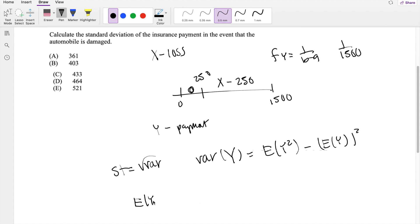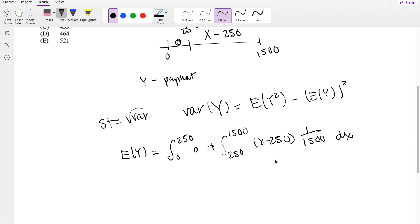So expected value of Y is equal to, going from 0 to 250 is just going to be 0, and from 250 to 1,500, the expected value is going to be X minus 250 times the probability distribution function, which is 1 over 1,500 dx. So then when you take the integral of this, you get 1 over 3,000 times X minus 250 squared, going from 250 to 1,500.